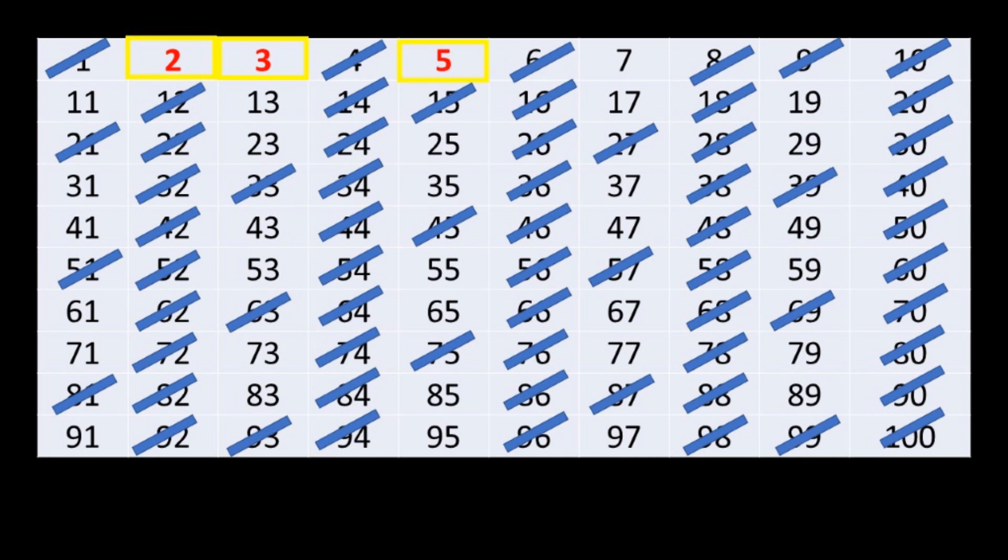The next number is 5, we circle it and cross out all of its multiples. The next number is 7, we circle it and cross out all of its multiples.